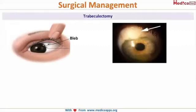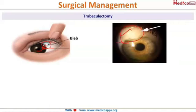The first surgery is trabeculectomy, where you cut out a piece of the trabecular meshwork. Here you can see a bleb forming — when a piece of the trabecular meshwork is removed, the aqueous humor starts flowing out of the eye and collects beneath the conjunctiva, lifting it up. This causes bleb formation. See, there is a beautiful bleb over here after the trabeculectomy.